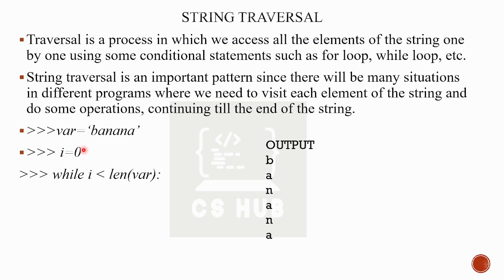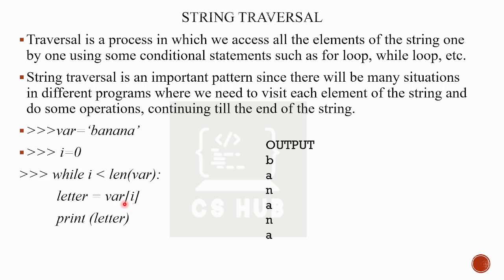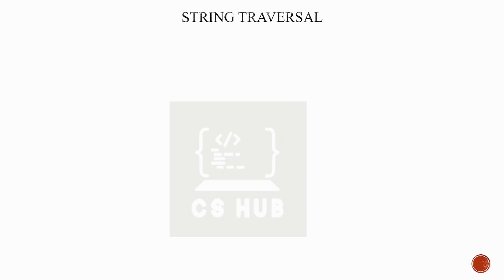For the while loop: set i = 0, while i is less than len(var), then letter is equal to var[i], print letter, and i equals i plus one. This gives the same output as the for loop — each character of the string is printed one by one.